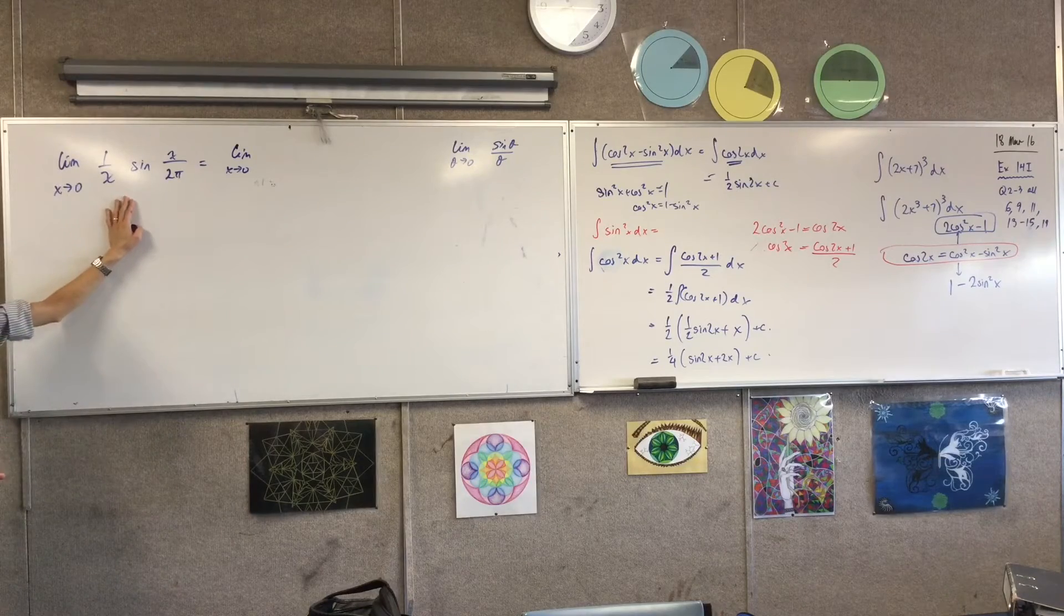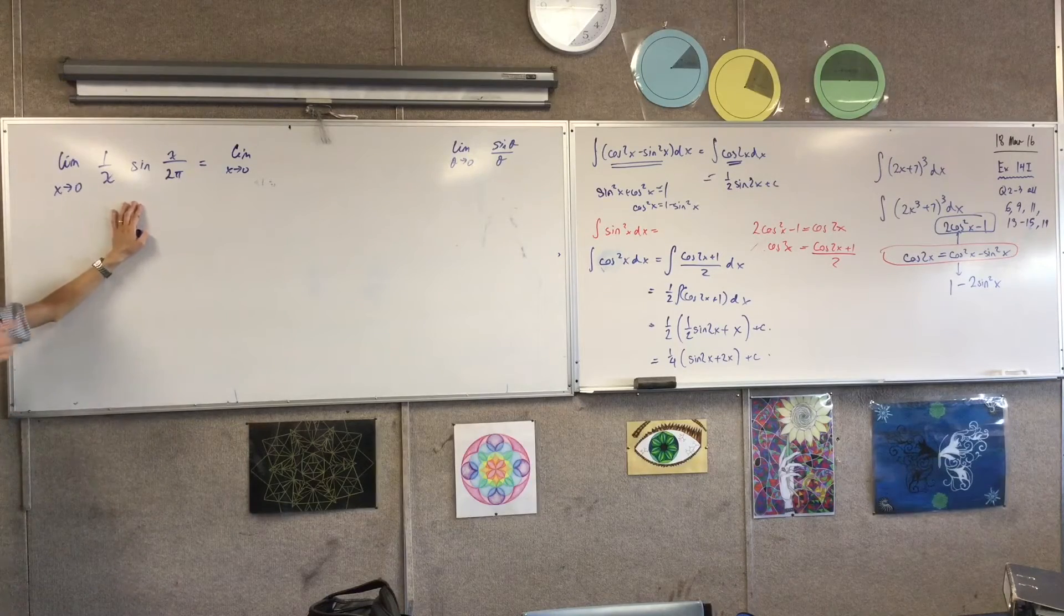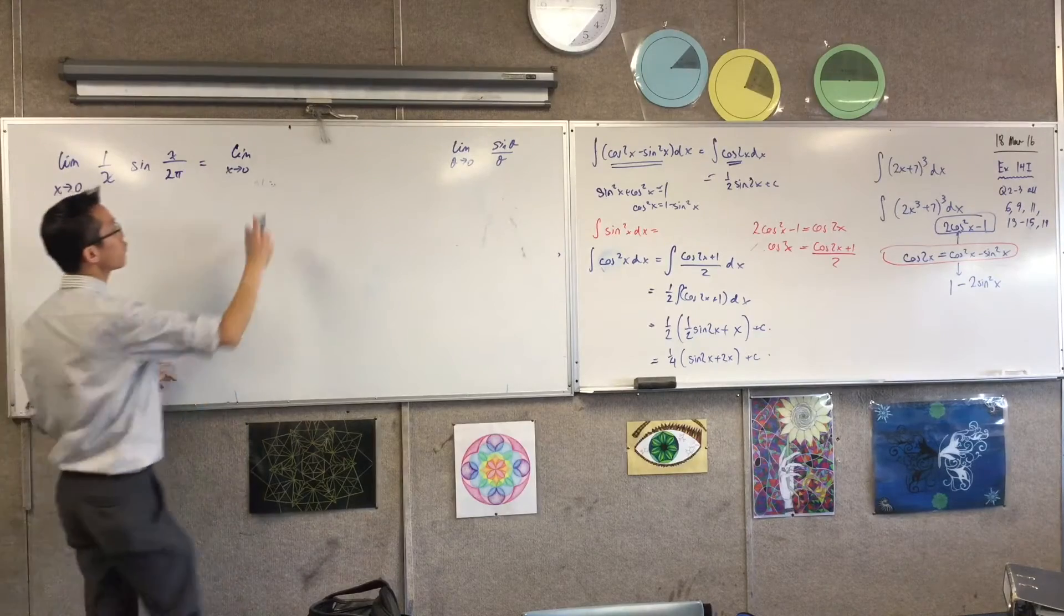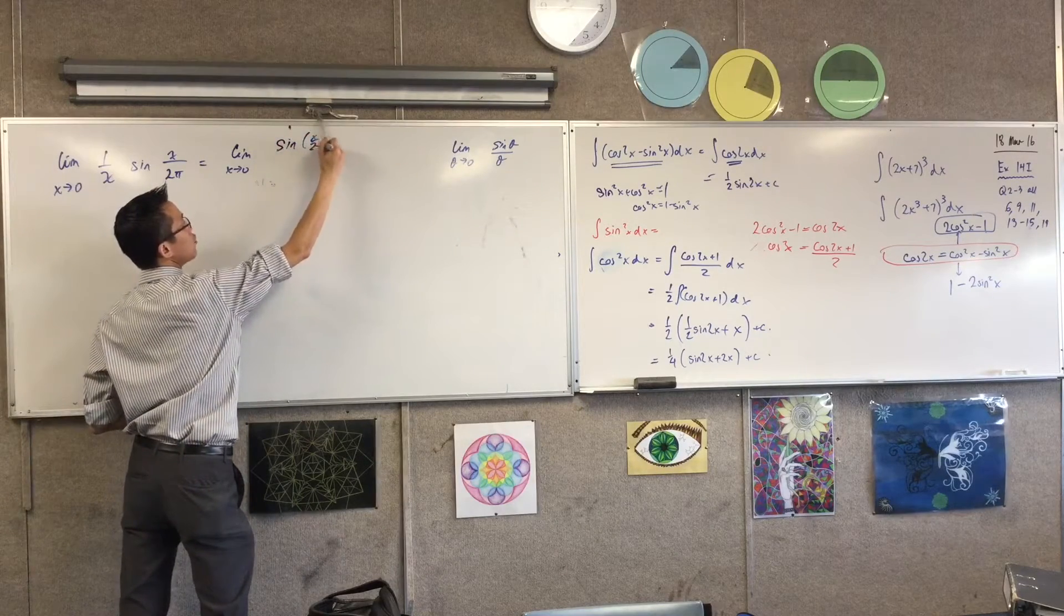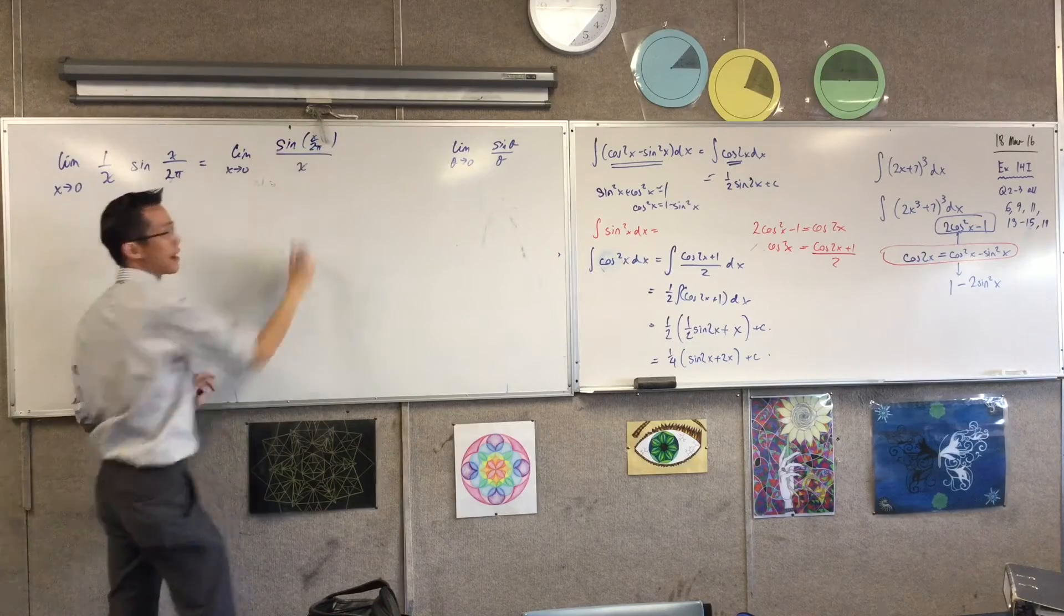Usually that doesn't really matter, but in this question, knowing what to divide and multiply by, it does matter. So I'm going to rewrite it like this: sine of x over 2 pi divided by x.